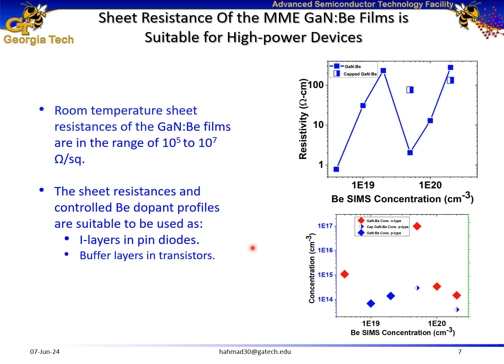I grew several samples of beryllium-doped gallium nitride in the beryllium doping range of mid-10¹⁸ to low-10²⁰ per centimeter cube. I achieved sheet resistances in the range of 10⁵ to 10⁷ ohm per square, which are suitable to be used as i-layers in PIN diodes and also as buffer layers in transistors. The carrier concentrations of these films were in the range of 10¹⁴ to 10¹⁵ per centimeter cube, suitable for i-layers in PIN diodes.